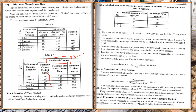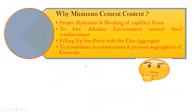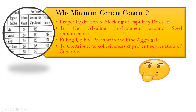An important question is: why does the code specify a minimum cement content? First, it ensures proper hydration and blocking of capillary pores — cement fills the fine pores due to its fineness. Second, it maintains an alkaline environment around the steel reinforcement. Concrete is highly alkaline with a pH close to 13, which requires sufficient cement; this alkalinity prevents corrosion of reinforcement.